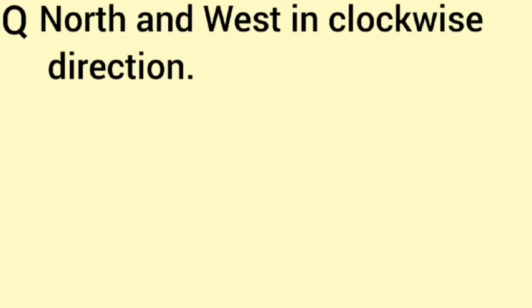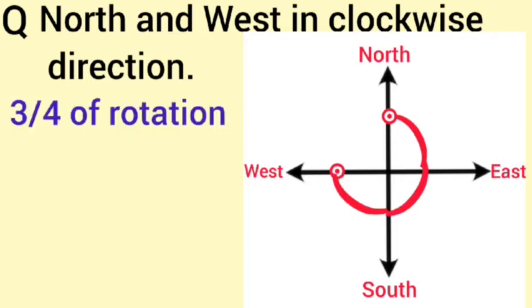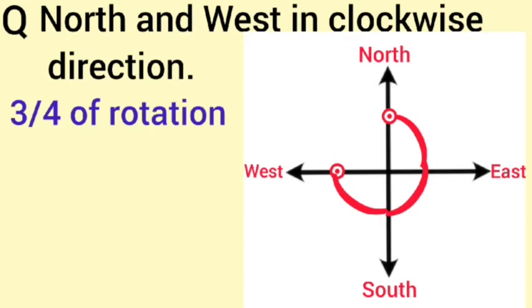Next is north and west in clockwise direction. See here that the angle between north and west in clockwise directions is 3 by 4 of a rotation. That is 3 right angles.